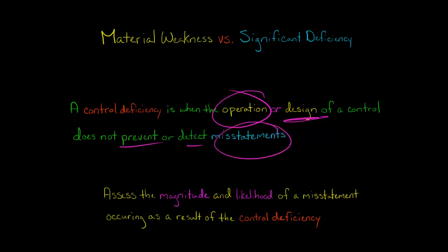Once you have identified a control deficiency, you have to figure out: what is the severity of this? You're going to assess the magnitude, and specifically we're thinking about materiality when it comes to magnitude. Materiality means: if this got into the financial statements, would it affect the decision of an investor or creditor?